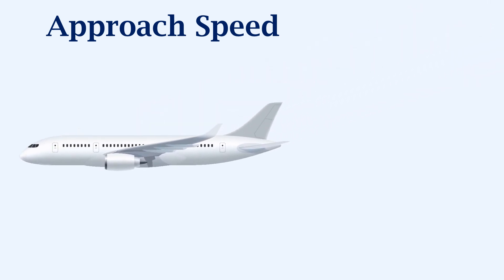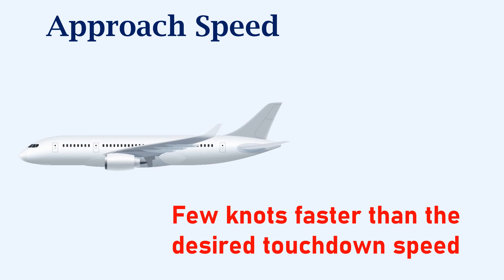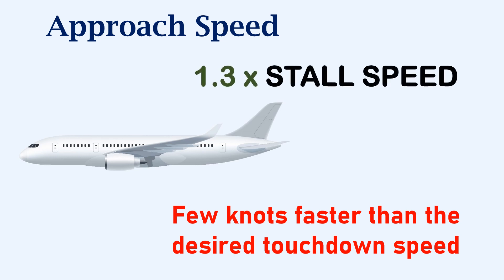The approach speed. During the approach phase, the aircraft speed must be a few knots faster than the desired touchdown speed. Depending on the aircraft manufacturer, this may be defined as V approach or V ref. These speeds will be at least 1.3 times more than the stall speed of the aircraft for a given landing configuration.